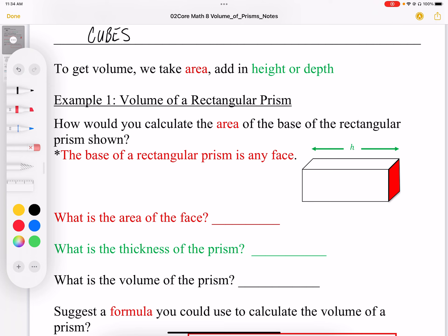So in this case here, the area of the face is going to be length times width. The thickness of the prism is going to be h. And so to generalize for the volume, the volume of the prism is going to be length times width times height.